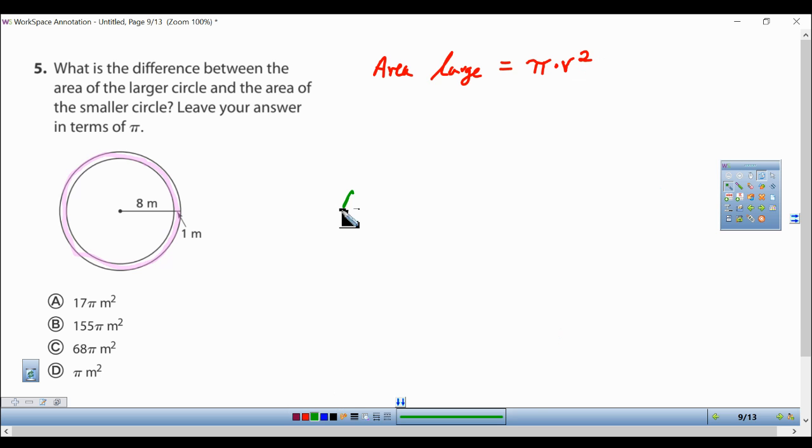We're going to find the area of the small circle. Area small is going to be pi times r squared.